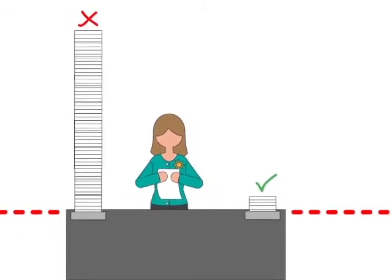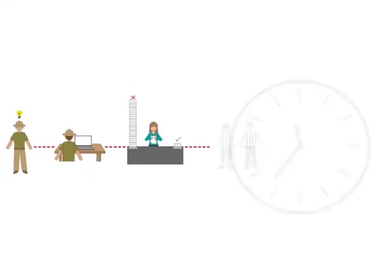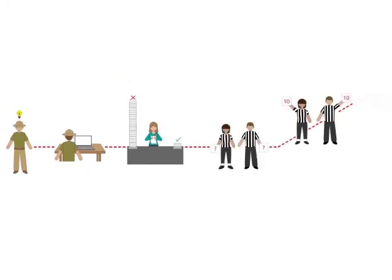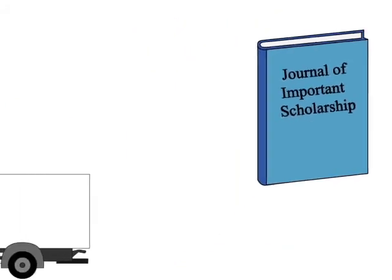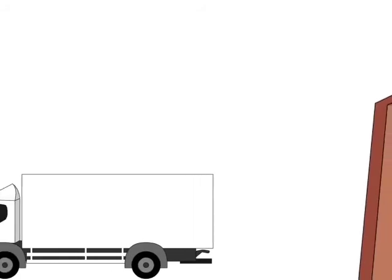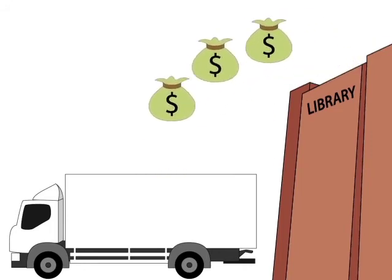From the time the researcher first submits his draft article to the time it is finally published, several months, or years, may have elapsed. Once the journal is published, it is made available to subscribers, which are usually university libraries, because individual subscriptions are very expensive, often hundreds or thousands of dollars a year.